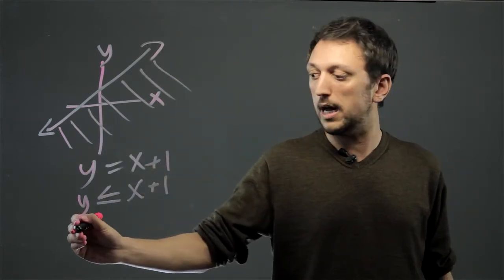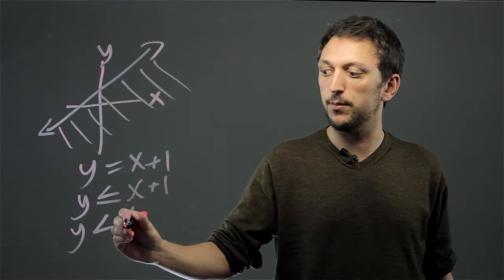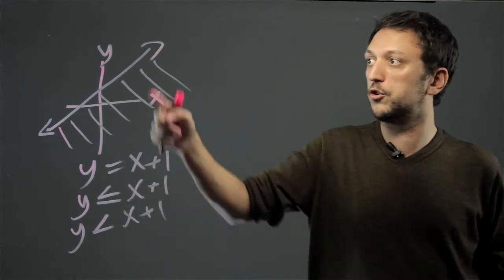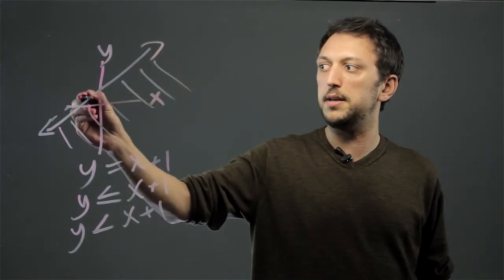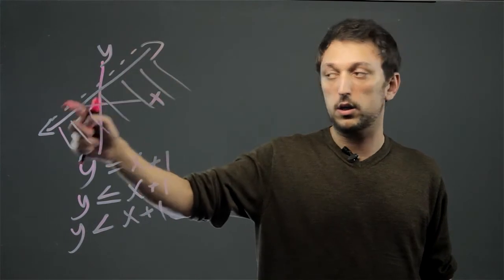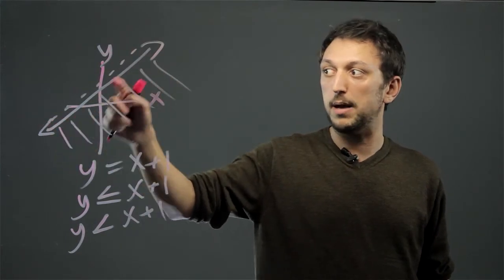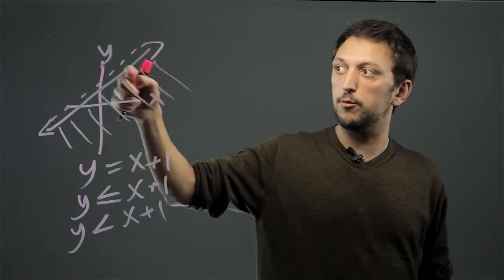And then if we said y is less than x plus 1, we would change this line into a dashed line, because it wouldn't include the boundary, it would be all that range below it.